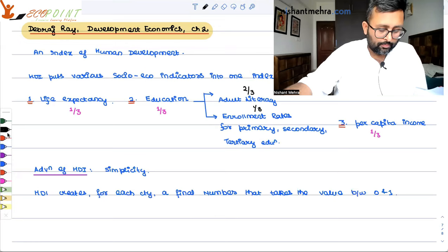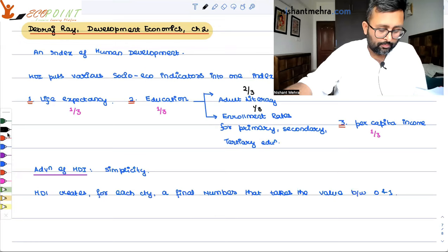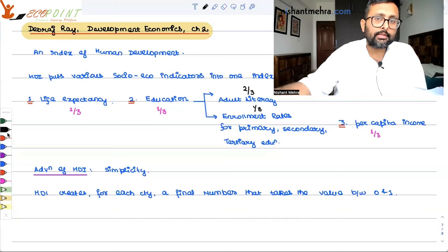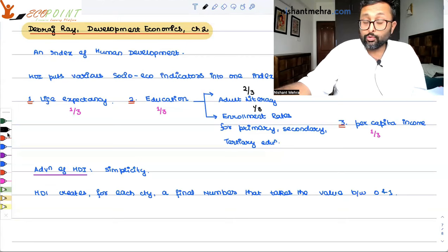You also have to understand that you cannot neglect per capita income, because there is some relation between per capita income and development. It can be argued that with rising income levels, you have resources to have better schools, better hospitals, and you can use those resources for welfare programs — and hence development is going to be better.